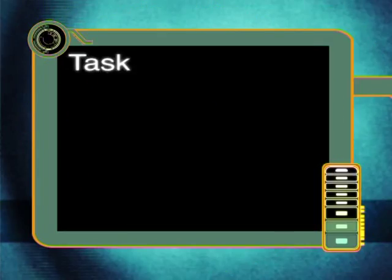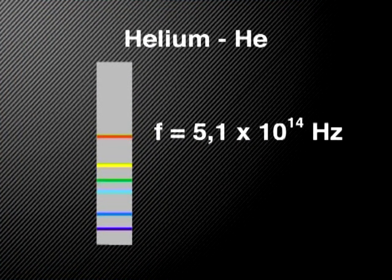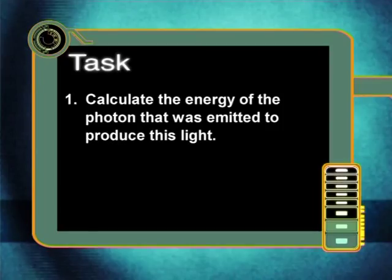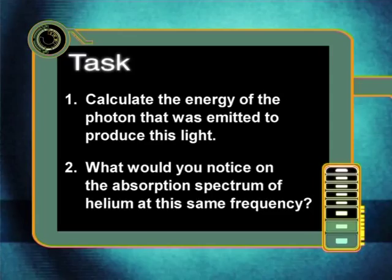Isn't it nice to know that the things you learn have practical applications? On that note, here's your task for today. When a helium emission spectrum is produced, one of the lines is yellow. The frequency of this yellow light is 5.1 × 10¹⁴ Hz. Calculate the energy of the photon that was emitted to produce this light. What would you notice on the absorption spectrum of helium at the same frequency? That's all for this lesson. I'll see you next time.